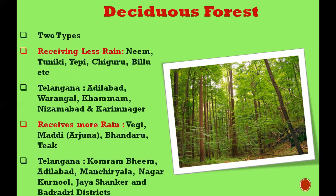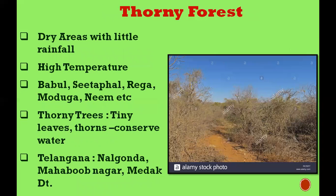The second type is deciduous forest, which has two subtypes — one receiving less rainfall and another receiving more rainfall. Both types are found in Telangana. Where there is less rainfall, we find neem, teak, and billu trees, seen in Adilabad, Warangal, Khammam, and Nizamabad districts. Where there is more rainfall, we find vegi, maddi, and teak trees in Kumaram Bheem, Nagarkarnool, Jayashankar, and Bhadradri districts. In deciduous forests, trees shed their leaves seasonally.